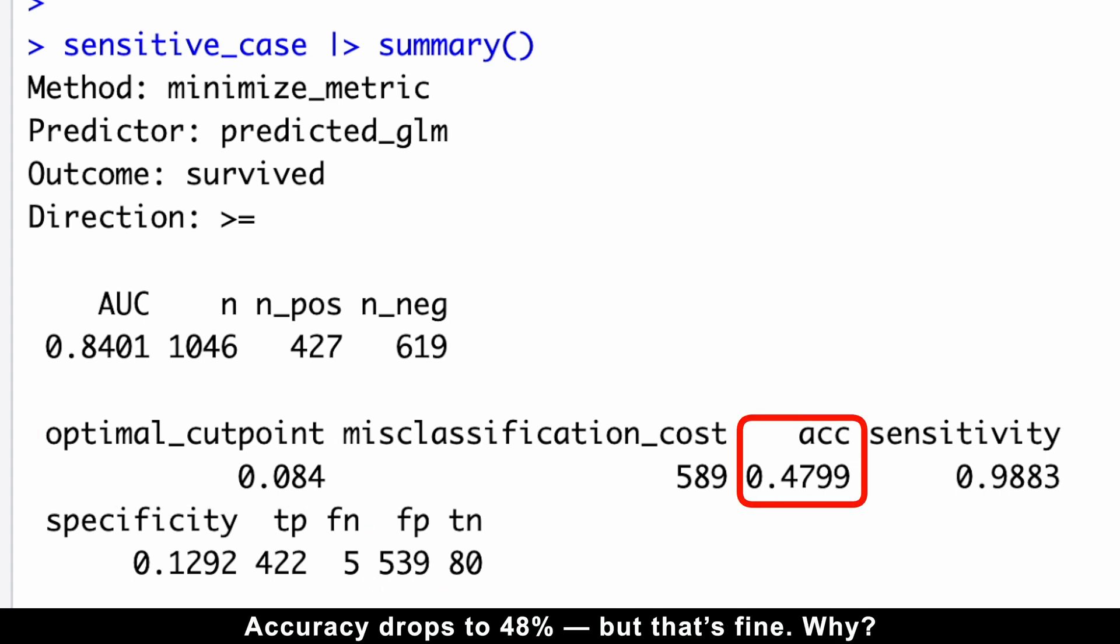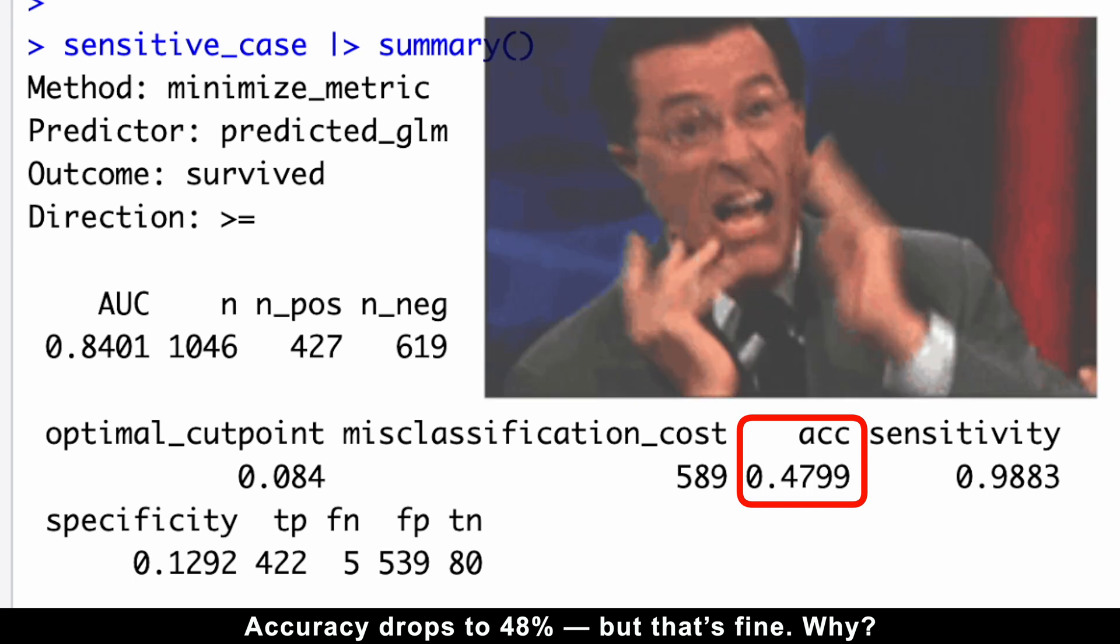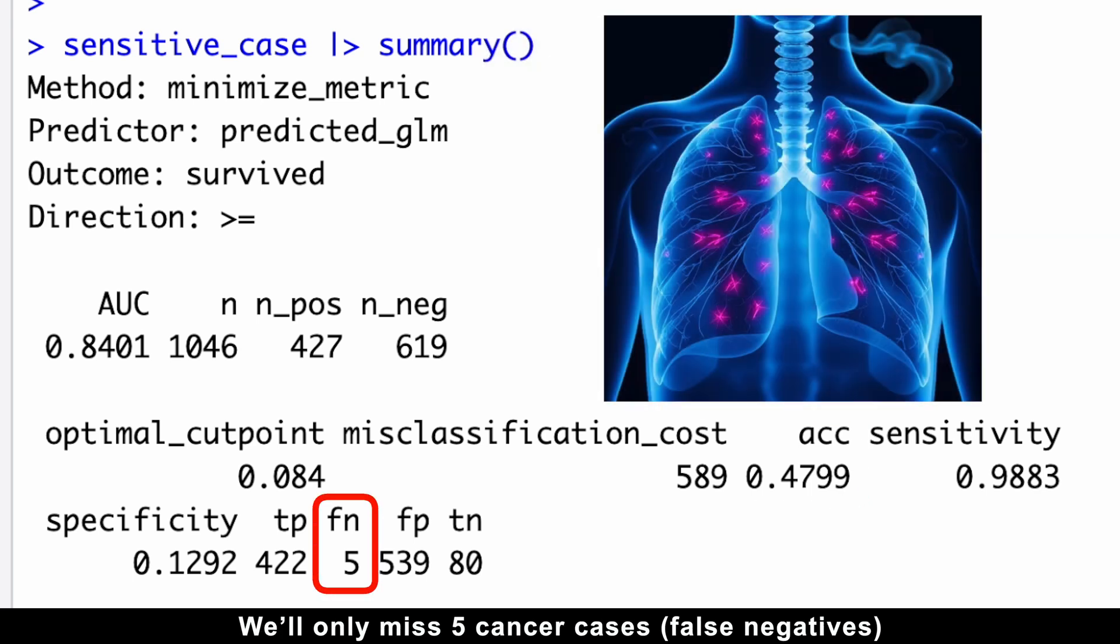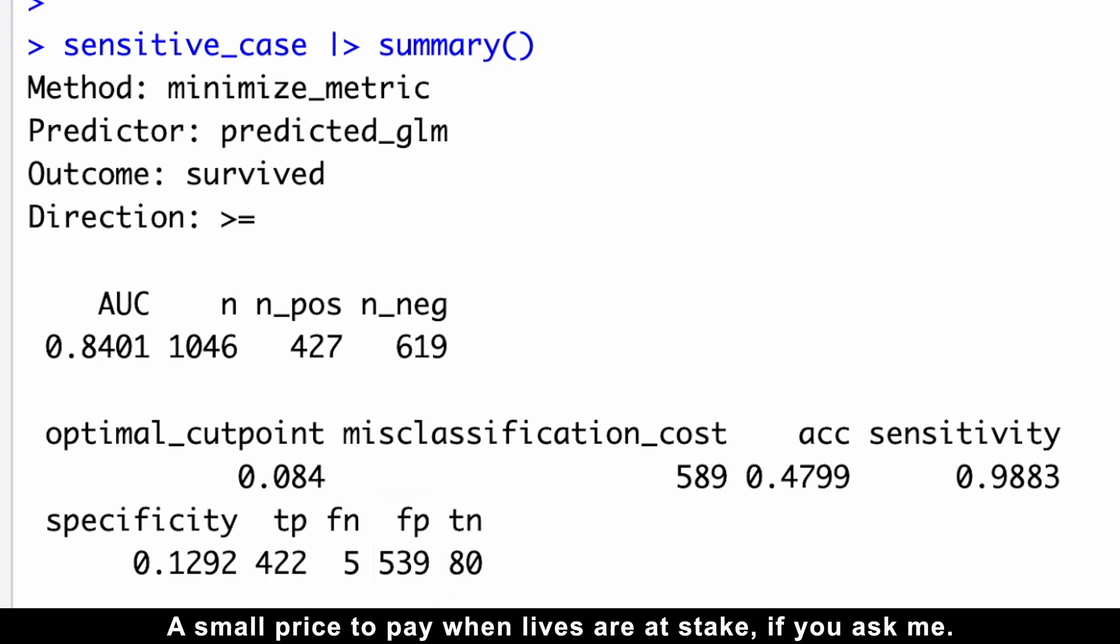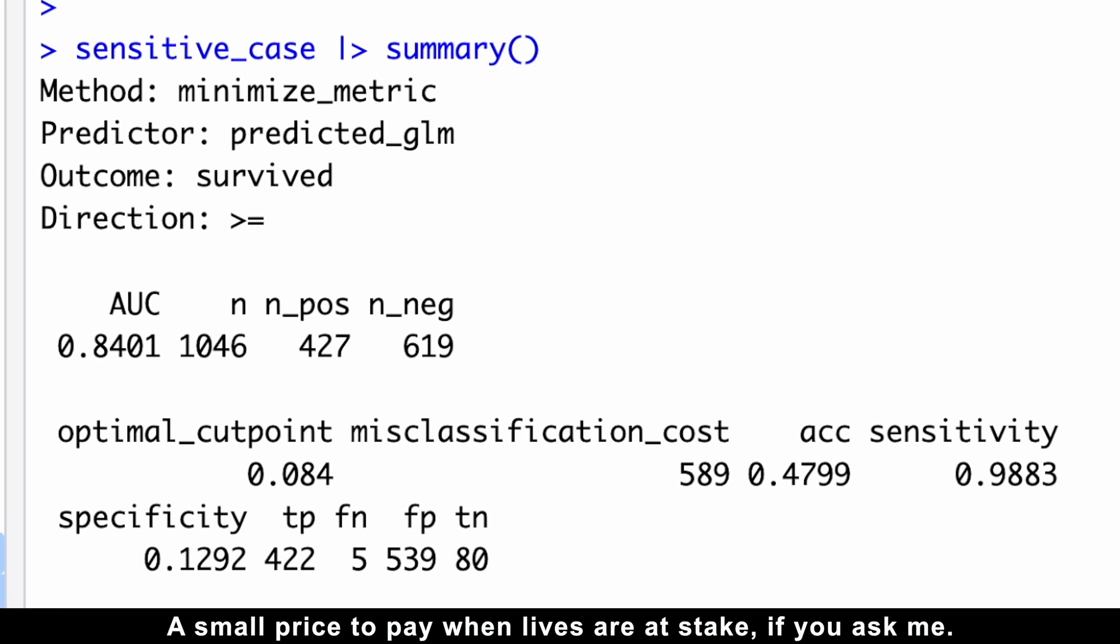Accuracy drops to 48%, but that's fine. Why? We'll only miss 5 cancer cases, but might scare over 500 people with false alarms. A small price to pay when lives are at stake, if you ask me.